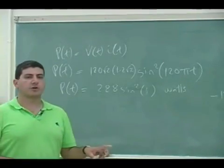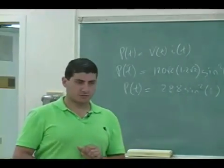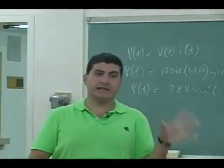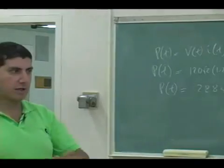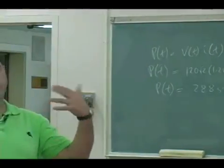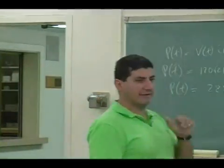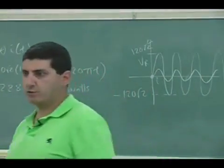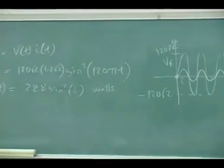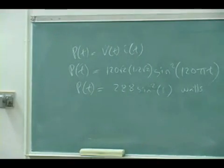So if I wanted to know the instantaneous power across the resistor at any time, I would do 288 times sine squared of whatever that is. But what if I want to know the average power over one cycle? So really what matters is the average power, not necessarily instantaneous at any time. What's the average power that is dissipated across the resistor?